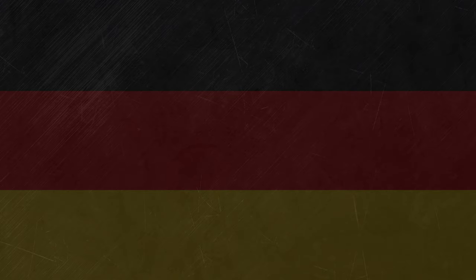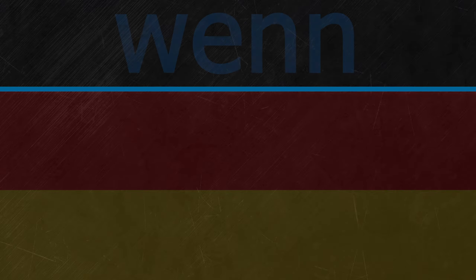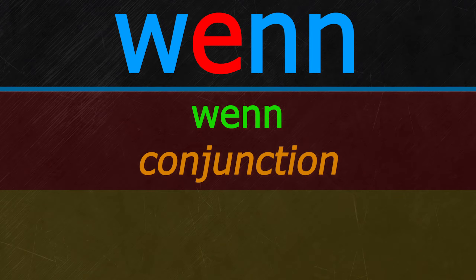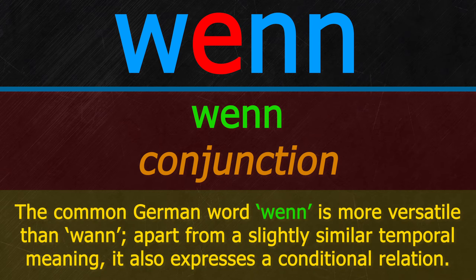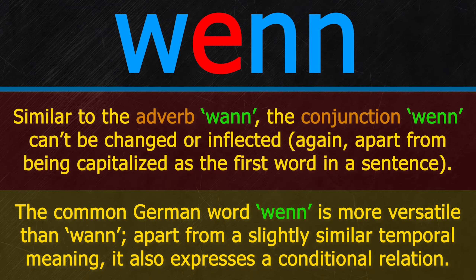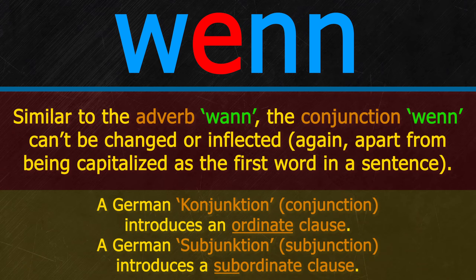Now let's take a look at the German WENN with an E and a double N. It's a bit more versatile in direct comparison. It functions as a conjunction and can neither be altered — which is a similarity to the temporal adverb WANN. Since it's a conjunction and not an adverb, it's a term that introduces a subordinate clause.